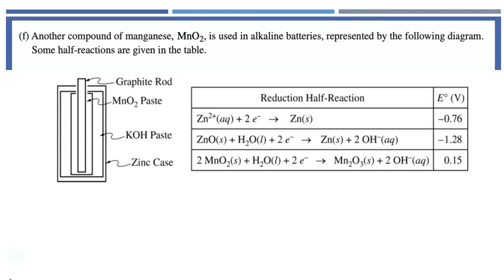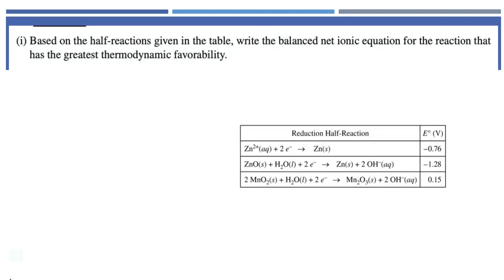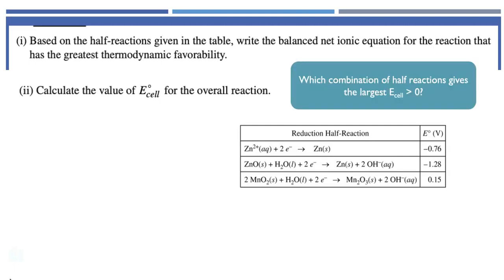Part F says, another compound of manganese, MnO2, is used in alkaline batteries, represented by the following diagram. And some half reactions are given to us in this table. I love electrochemistry. Based on the half reactions given in the table, write the balanced net ionic equation for the reaction that has the greatest thermodynamic favorability. And the next part says, calculate the value of E0 cell for that overall reaction. I actually find for these kinds of questions that I like to do them together.